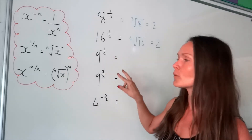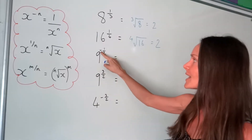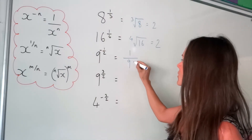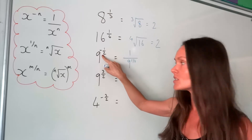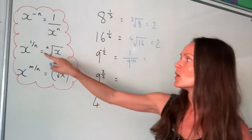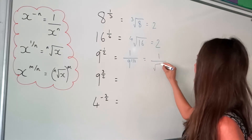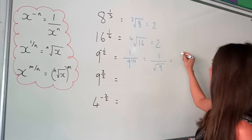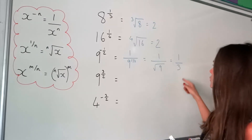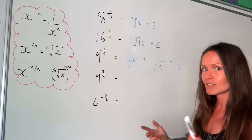This one is a combination of two rules: the power is negative and it's also a fraction. Because it's negative, write the number as a fraction: 1 over 9 to the positive half — the power changes to positive when you make that switch. A power of a half means square rooting, so you square root 9. The square root of 9 is 3, so the answer is one third. If a second solution is needed, you can also use negative three.